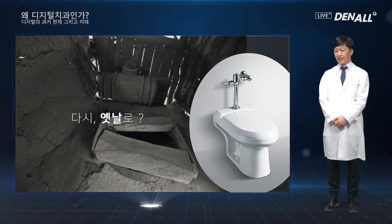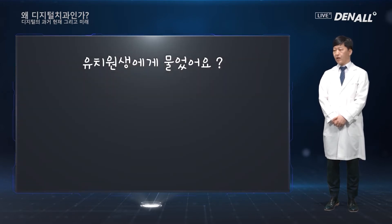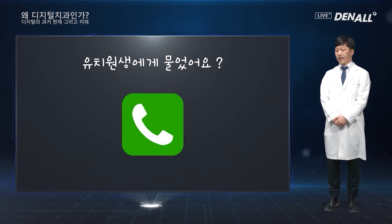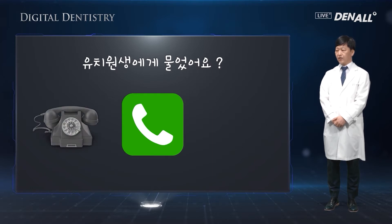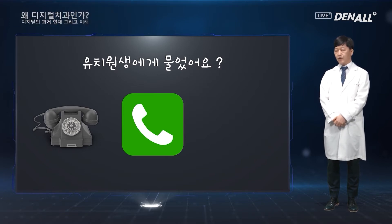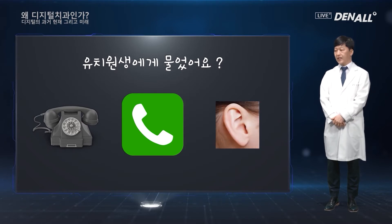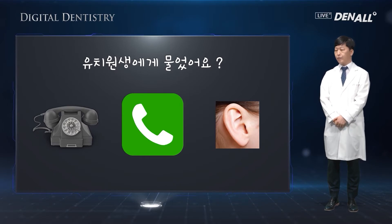Will people be able to turn back to their old ways? A question was asked to kindergarteners: what does this image resemble? For older generations, people think of the handle of an old traditional telephone. However, these days, young kids look at this image and don't think of a telephone handle — they think of a person's ear. Therefore, there is a stark difference in how the young and the old think.